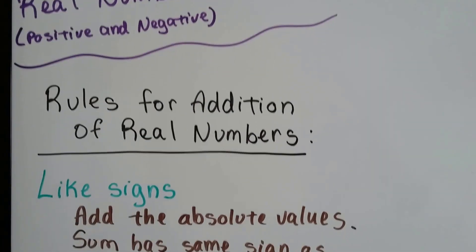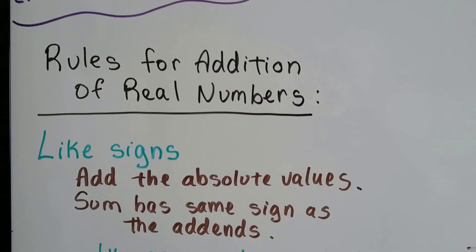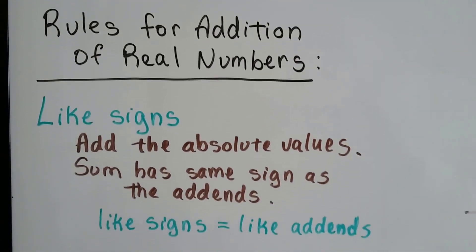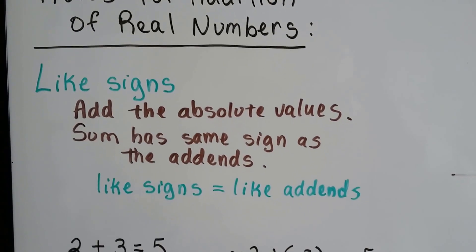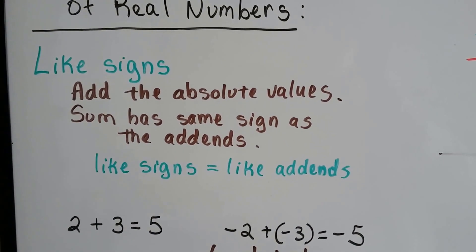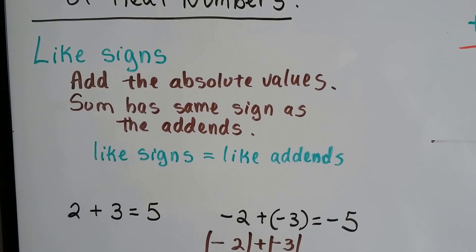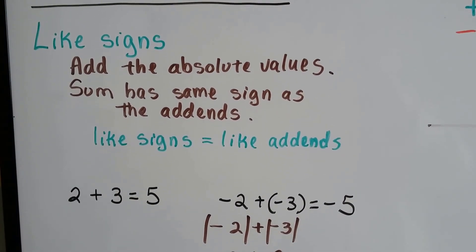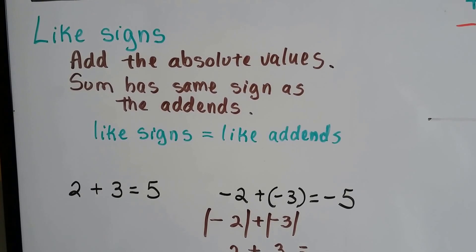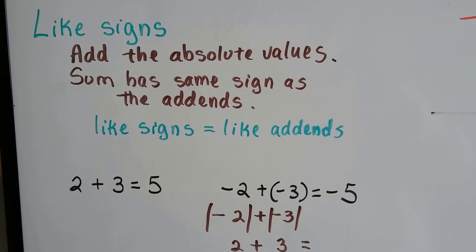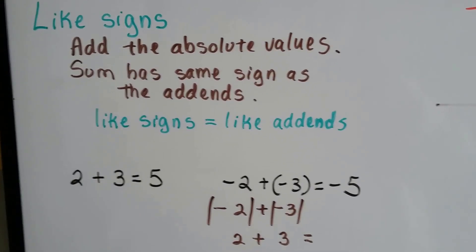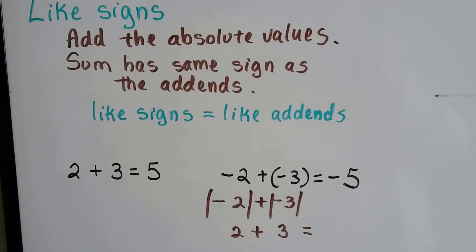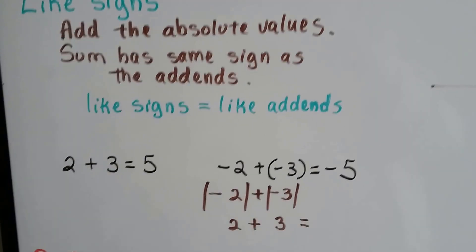The rules for addition of real numbers: when the signs are like signs, we add the absolute values and the sum has the same sign as the addends. So like signs, like addends.